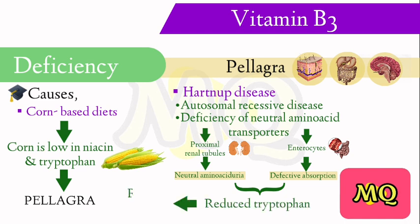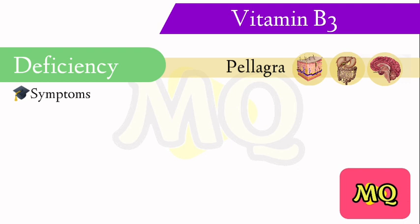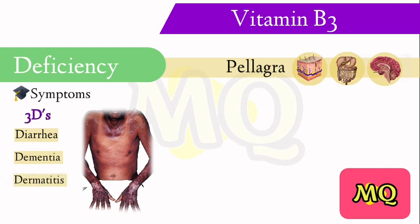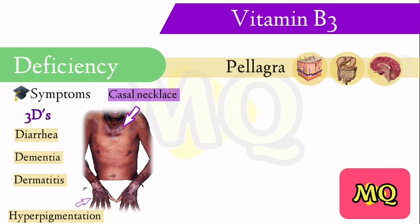As tryptophan is reduced, formation of niacin is also reduced, resulting in pellagra-like symptoms. The symptoms of pellagra progress through the three D's: diarrhea, dementia (also hallucinations), and dermatitis. Dermatitis presents as a circumferential broad collar rash at the C3 or C4 dermatome, called Casal's necklace, with hyperpigmentation of sun-exposed limbs.